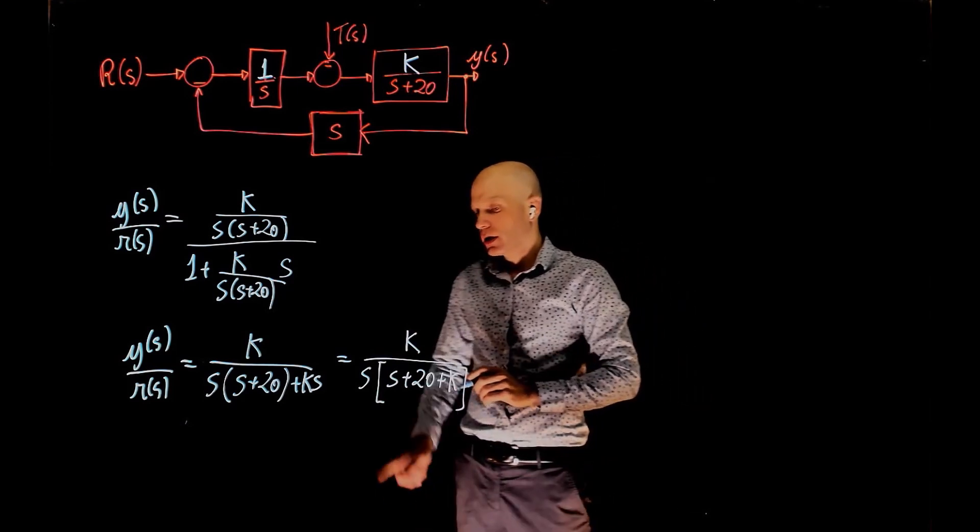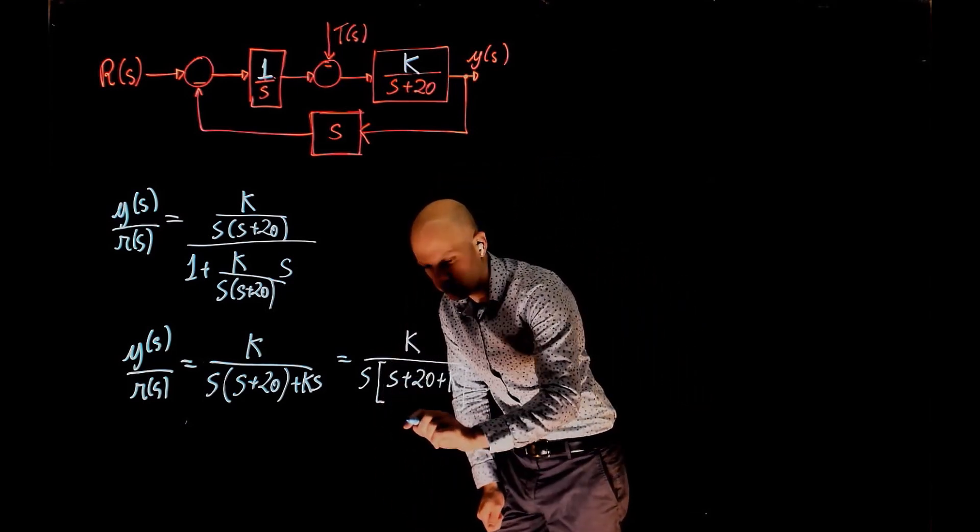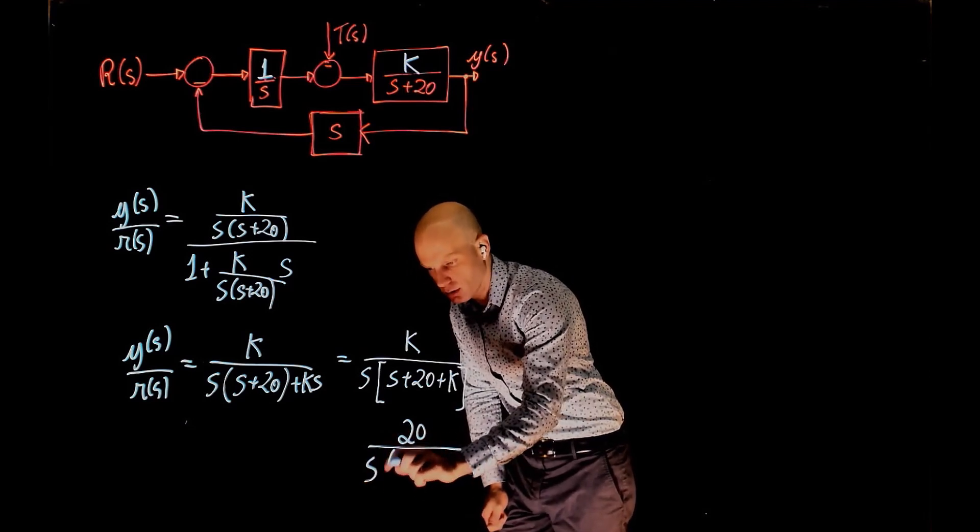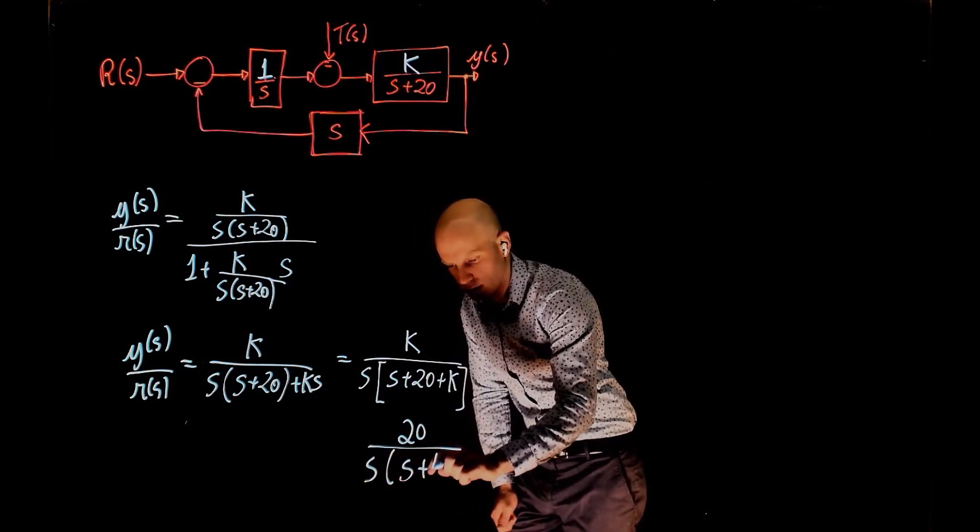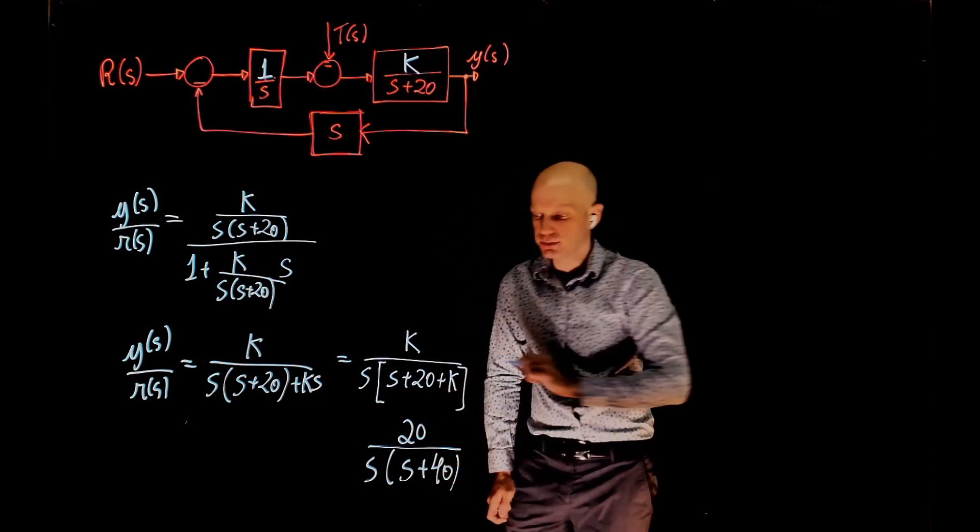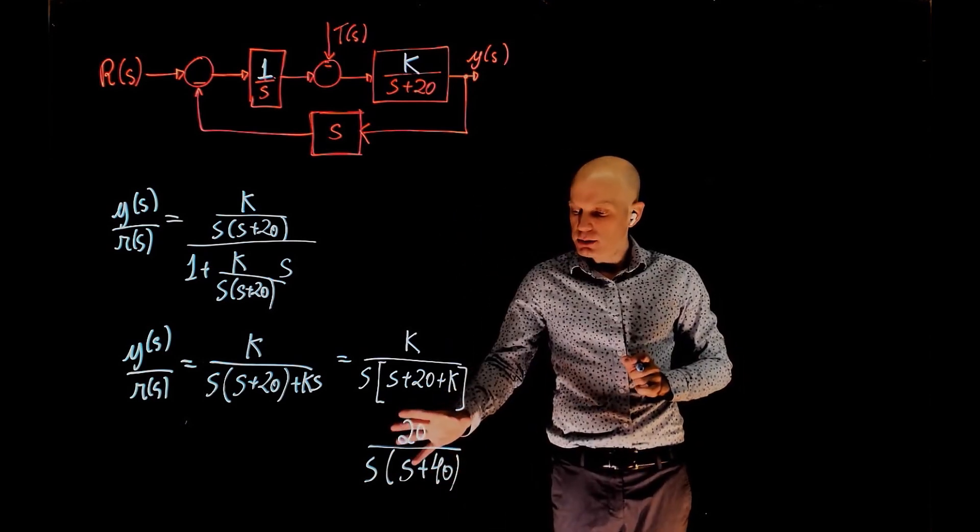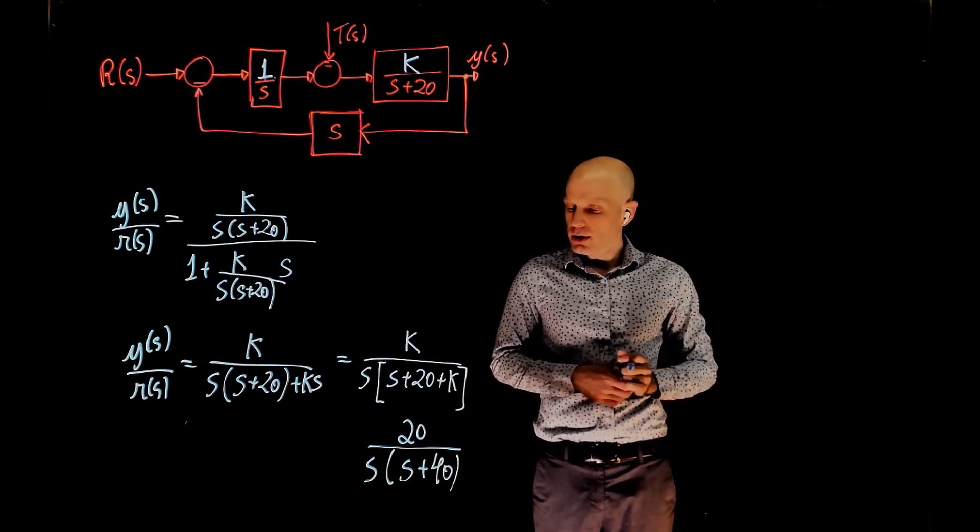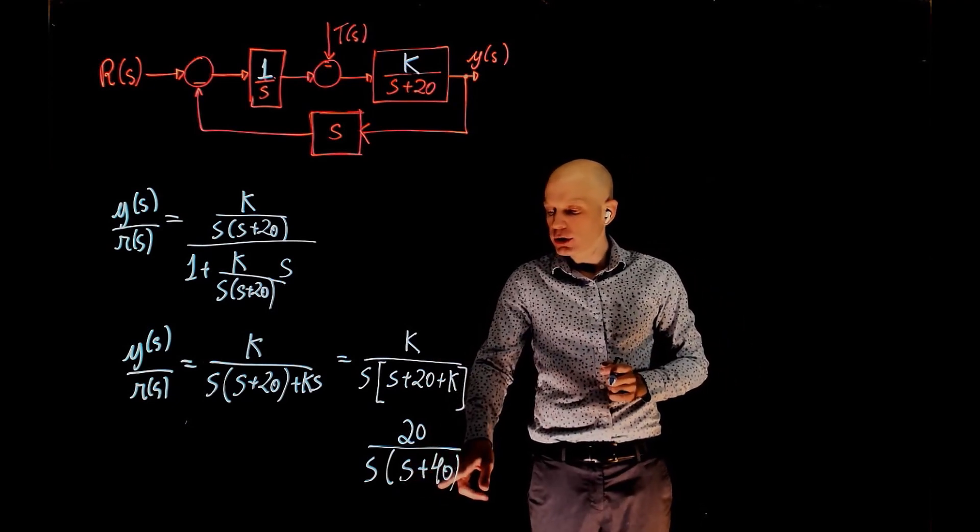The problem says that k is 20, so here we have 20 divided by s times (s + 40). Now, looking at this expression, it does not fall into the standard form for second order equations. If you are looking at the time constant, we can look at s + 40 here.